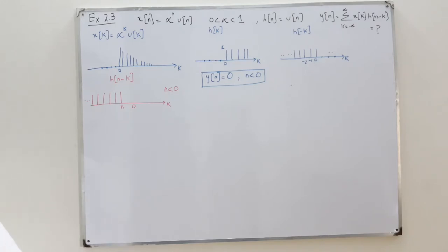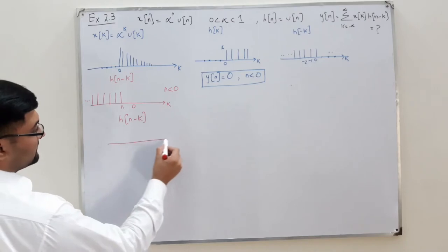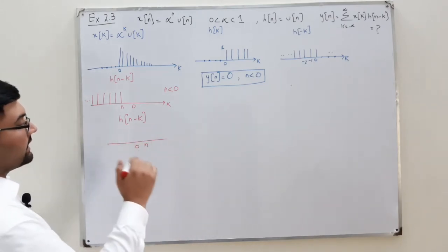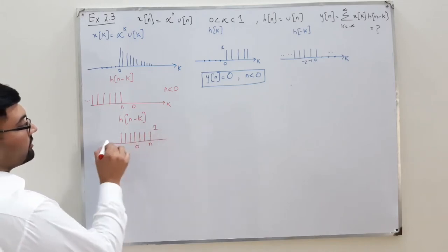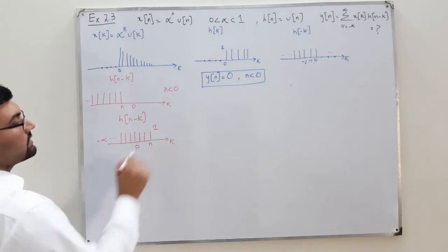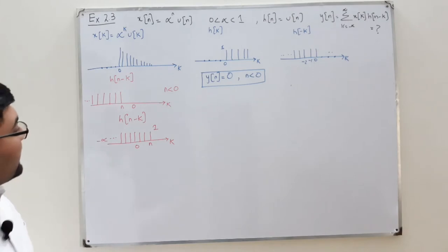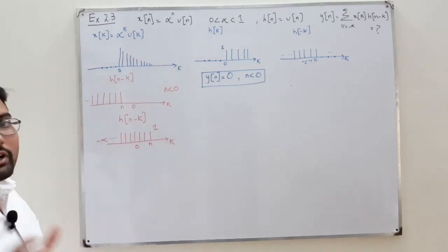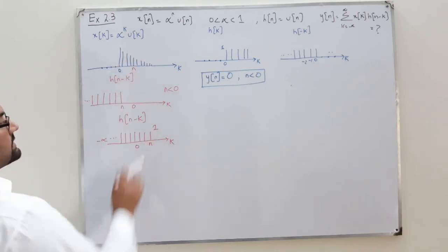Now for n greater than or equal to 0, h(n minus k) has been shifted to the right, so it equals 1 from negative infinity up to n. The function x(k) exists starting from 0, and h(n minus k) goes up to n. So the product only exists in the interval from 0 to n.